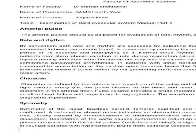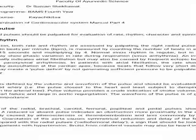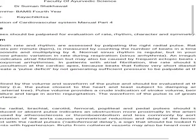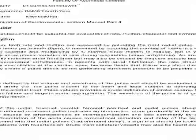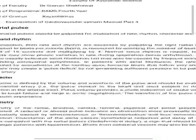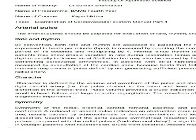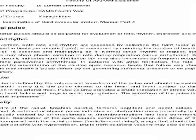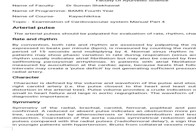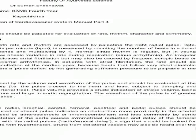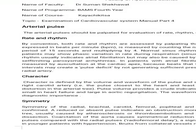Beats that follow very short diastolic intervals may create a pulse deficit by not generating sufficient pressure to be palpable at the radial artery. Character is defined by the volume and waveform of the pulse and should be evaluated at the right carotid artery — the pulse closest to the heart and least subject to damping and distortion in the arterial tree. Pulse volume provides a crude indication of stroke volume, being small in heart failure and enlarged in aortic regurgitation. The waveform of the pulse is of greater diagnostic importance.